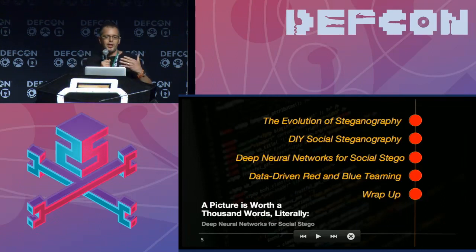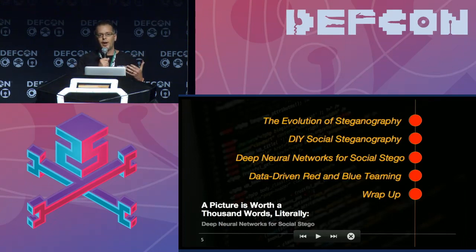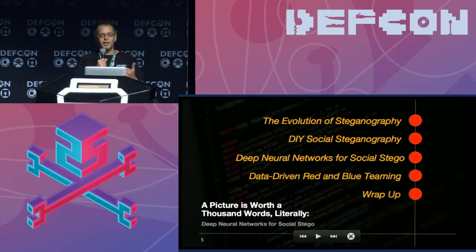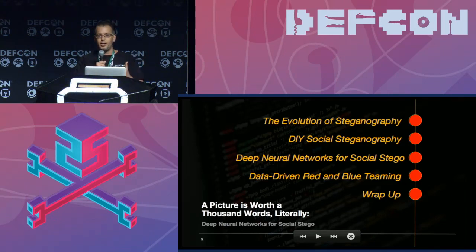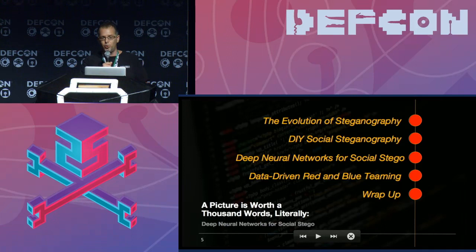Our agenda: we'll go through the evolution of steganography and bring you up to speed, focusing on everything that led up to our idea around using social media for covert communications. We'll then get into DIY social stego — I'll walk you through the testing we went through to vet out various methods for hiding data across images, audio, and video. Then Phil will take over for deep neural networks, red and blue teaming approaches, and real-world use cases.